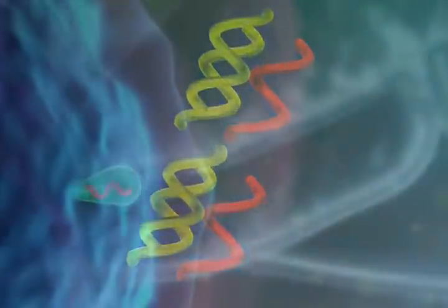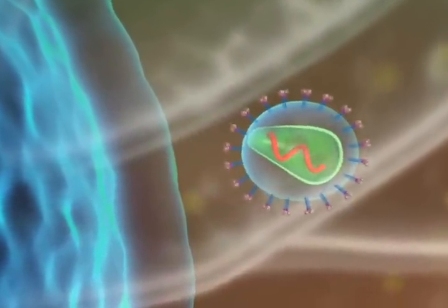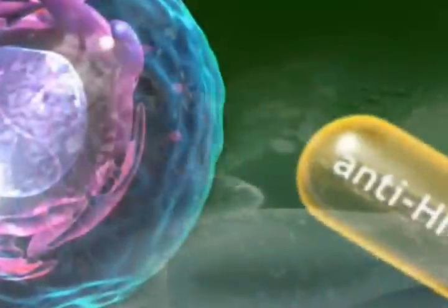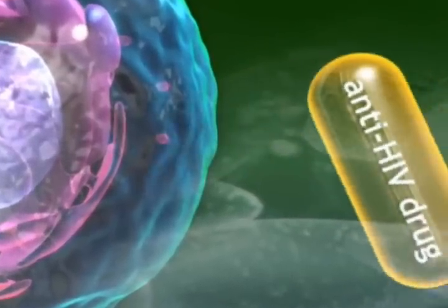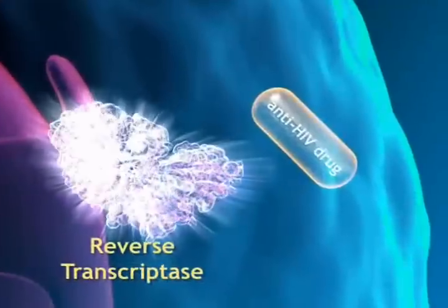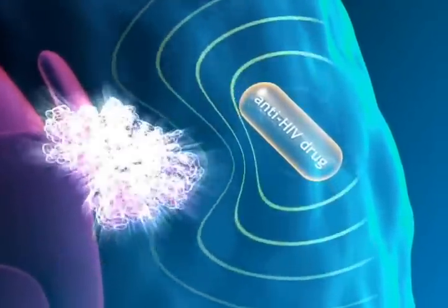New viral particles emerge from the host and go on to affect other cells. Most AIDS drugs slow HIV replication by inhibiting viral enzymes within cells already affected by HIV.